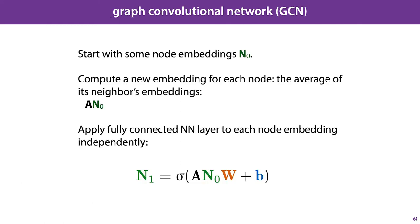This is the basic principle used in graph convolutional networks. The word convolution here is used because they were inspired by image convolutions, but the connection is loose, so it's best not to read too much into it. The idea is that we start with some node embeddings, we call that N0, we compute a new embedding for each node, which is the average of its neighbors' embeddings, and we can compute this easily by multiplying by the adjacency matrix. And here we assume A has the self-loops included and has been normalized, and we then apply a fully connected neural network layer to each node embedding independently. And this gives us a new set of embeddings, N1. We've used a sigmoid activation here, but we can also use a ReLU activation or a linear activation. What works best depends on the data.